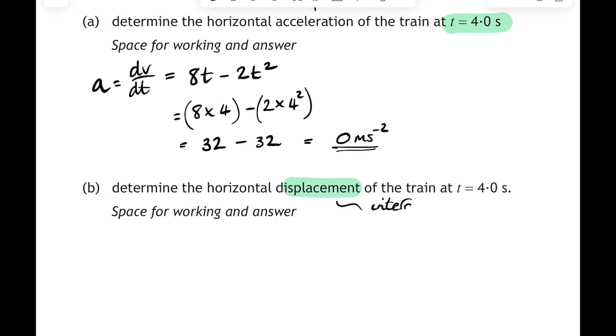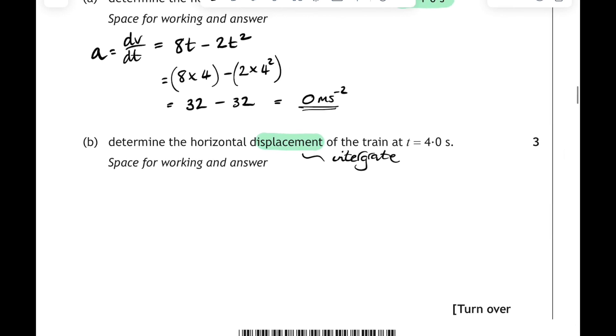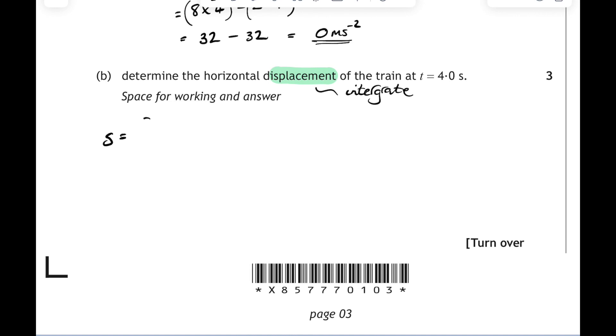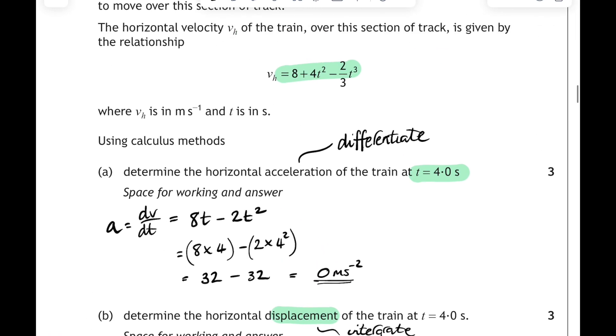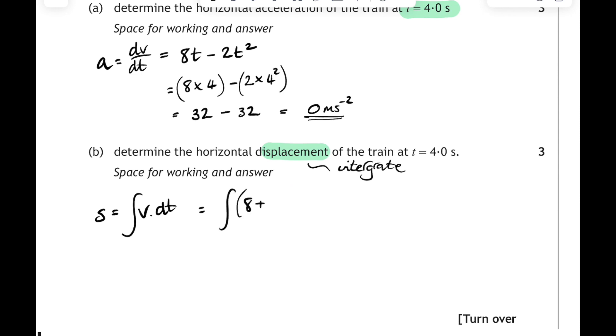And in part b, what's the displacement? Well, displacement, we're going to integrate the velocity relationship. So displacement is the area under the velocity time graph, or the integral of velocity with respect to time. And then let's integrate that initial relationship. So we're integrating 8 plus 4t squared minus 2 over 3t cubed with respect to time. Now, if you use your rules of integration, remember, the power goes up by 1, that becomes 8t. The 4t squared becomes 4t cubed over 3, or 4 over 3t cubed. And the last bit becomes minus 2 over 3t to the 4 divided by 4, which makes it 2 over 12 times t to the power of 4. That's pretty tricky as well.